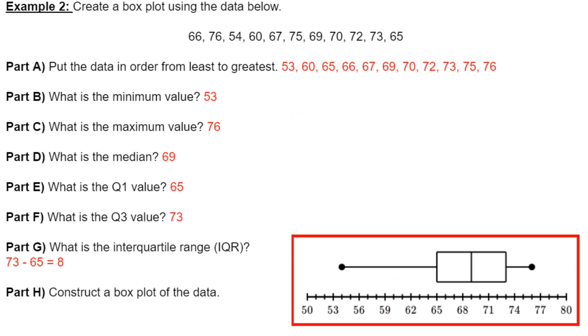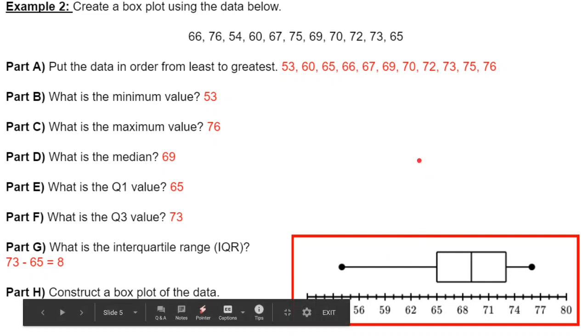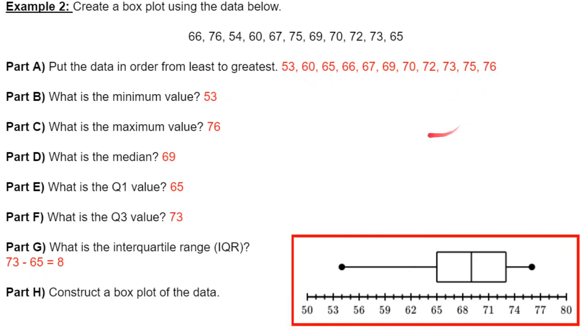We've got one more example here. We have our data, and the first thing you want to do with your data is, if it's not already in least to greatest, put it in least to greatest. So, least to greatest here - minimum, maximum, median. Now, this is an odd set of data. There's an odd number of data in this. So we can easily point out that median, the quarter one value, and the quarter three value, because we don't have to average anything this time around. So this is the median. And then the first quartile is the median of that lower set. And the third quartile is the median of that higher set.